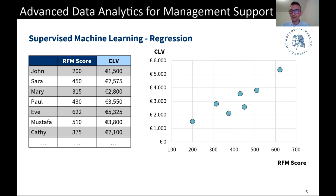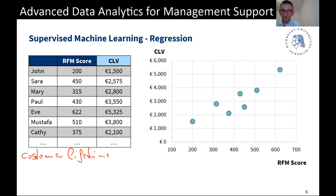This dataset represents customers — John, Sarah, Mary, Paul, Eve, Mustafa, and Casey. There are two things we know about each customer. One is CLV — Customer Lifetime Value — an important concept in marketing. Essentially, it's the net present value: all future revenues from that customer minus the costs we invest in the customer relationship, discounted to the present day. That's CLV in a nutshell.